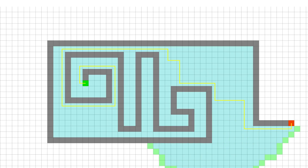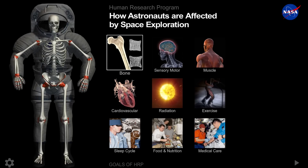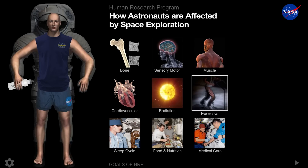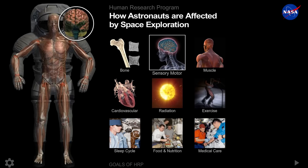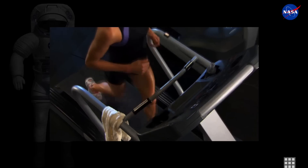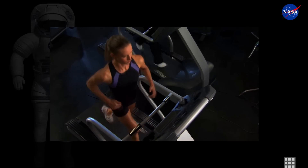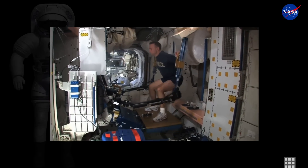Find out what will happen to your body in space with 'How Astronauts Are Affected.' Select from bodily systems or habits — for example, cardiovascular exercise: if you have lower cardiovascular function, this could jeopardize health and performance, but exercise can help counter the effects of reduced gravity.